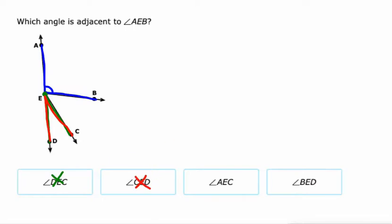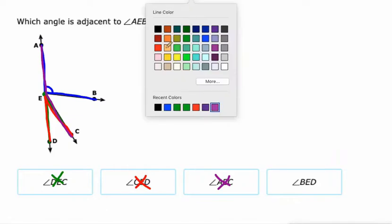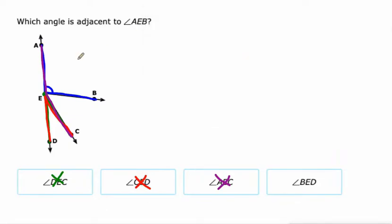How about AEC? AEC. They have a common vertex and a common side, but they're not adjacent to each other. Maybe that definition doesn't do it justice. And what about BED? That's the one we want. See, they share a side and a vertex. That's the one we want.